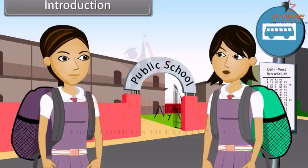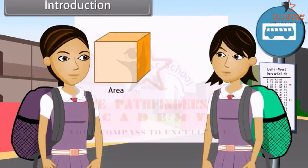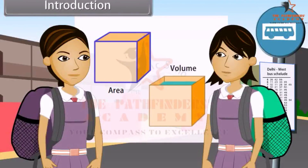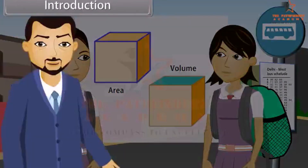Surface area is exactly what it sounds like — the area of all the outside surfaces of a three-dimensional object. And volume is all of the space inside a three-dimensional object. In this lesson, you will learn more about both of these concepts as well as how to compute the surface area and volume of a combination of solids.